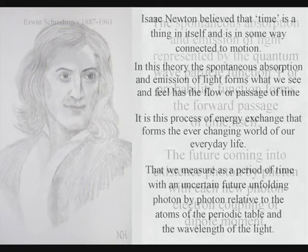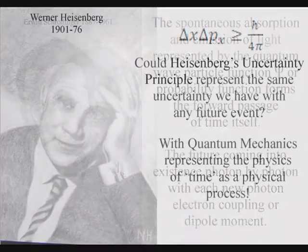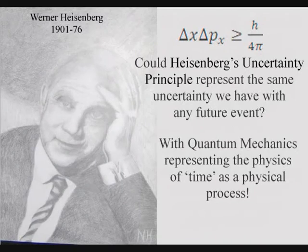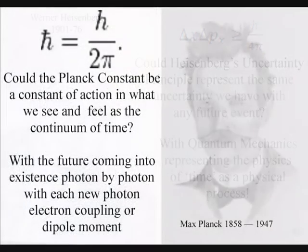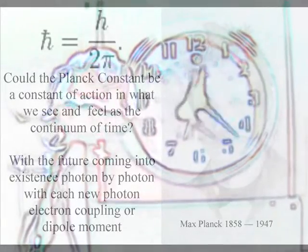At the smallest scale of this process, our potential future possibilities and opportunities are represented mathematically by Heisenberg's uncertainty principle, with the Planck constant being a constant of action in the dynamic geometrical process that we see and feel as the passage of time.